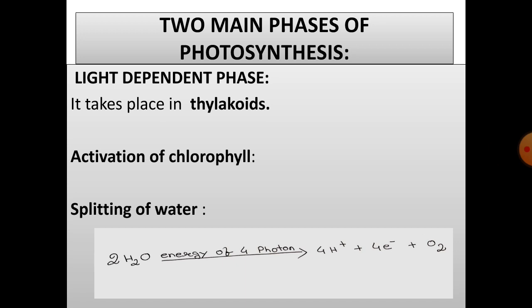One is the light dependent phase, another is the light independent phase. The light dependent phase occurs in the presence of light, where light plays the key role. This phase takes place in thylakoids.